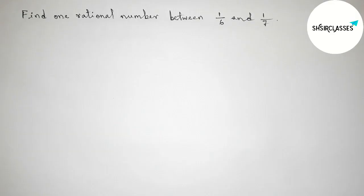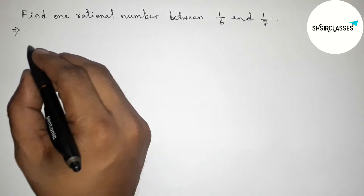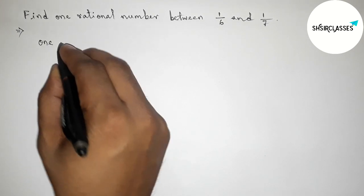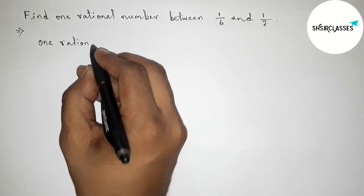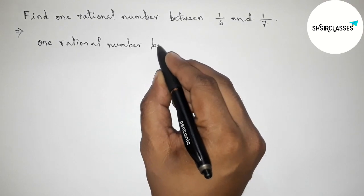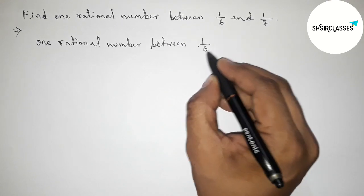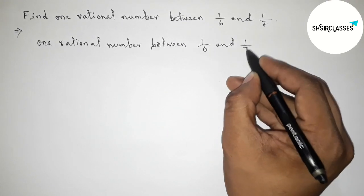First of all, let us solve this problem. We have to find one rational number between 1/6 and 1/7 by using mean value theorem. So first, finding the mean of 1/6 and 1/7.